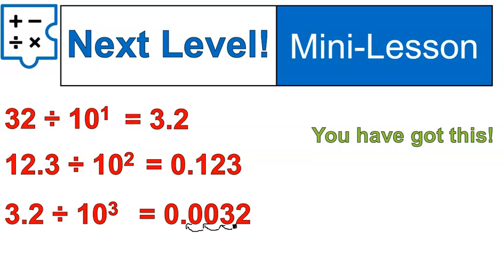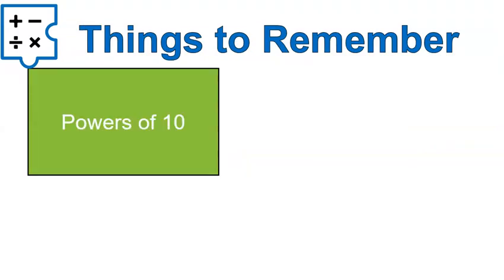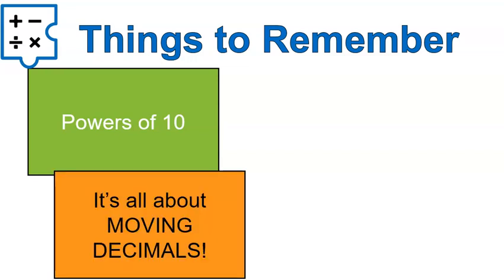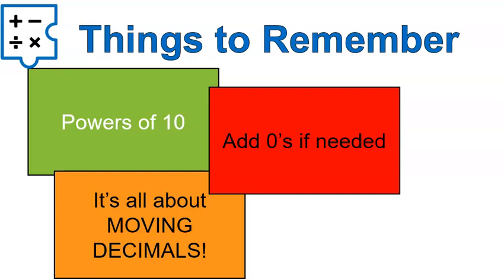Now on our worksheet and in the quiz, you will not be doing this with the exponents of 10. You'll be doing similar to the previous questions, dividing by 10 and dividing by 100. But this is where it's going into something that you will see in the future, 10 raised to the power of different numbers. A couple of things to remember. Powers of 10 means you're raising 10 to the power of something. It's all about moving decimals. You do have to add in zeros sometimes depending on the number of spaces the decimal moves. I hope that video was helpful for you. Good luck on the worksheet. Have a wonderful day.